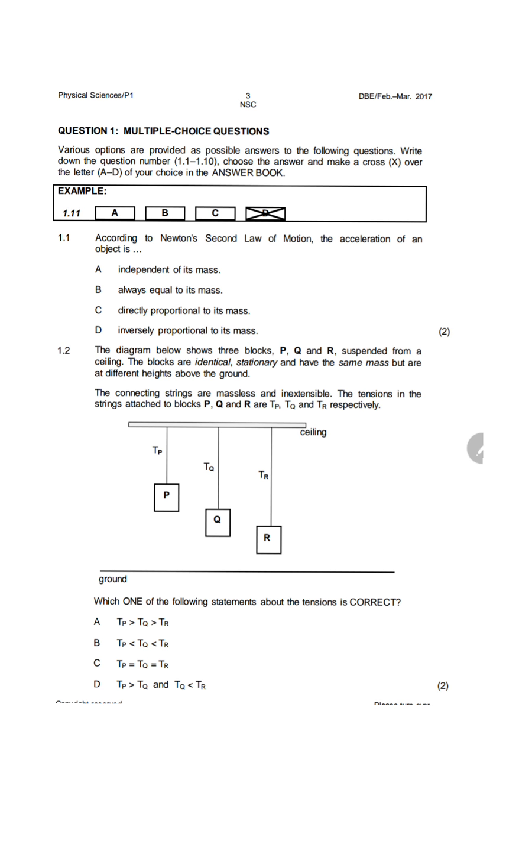The first question: according to Newton's second law of motion, the acceleration of an object is. They ask us whether the acceleration is independent of its mass, equal to its mass, directly proportional to mass, or inversely proportional to mass.